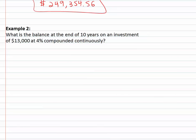Let's look at another example with continuous interest. Here we're asked to find the balance at the end of ten years on thirteen thousand dollars at four percent compounded continuously. There's that key phrase continuously. When you see continuously, know that's the equation a equals p e to the r t.